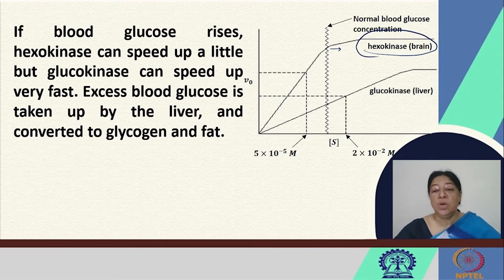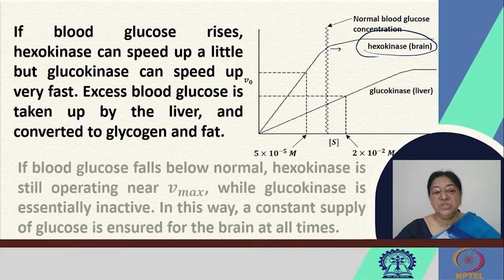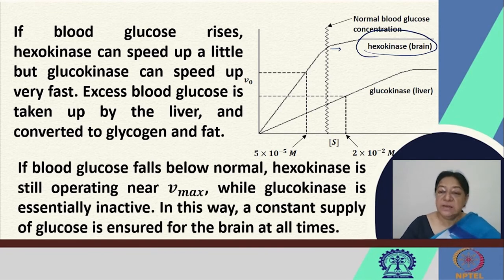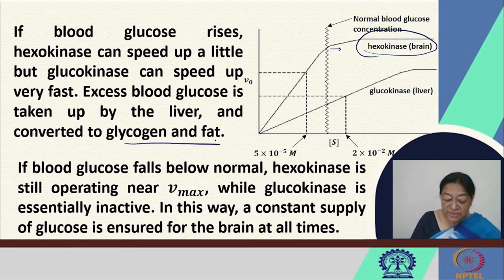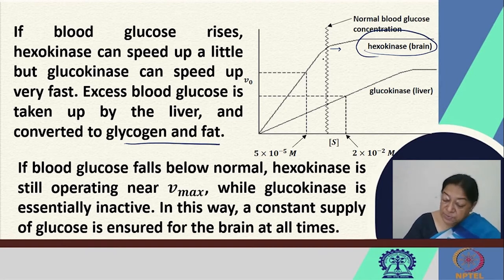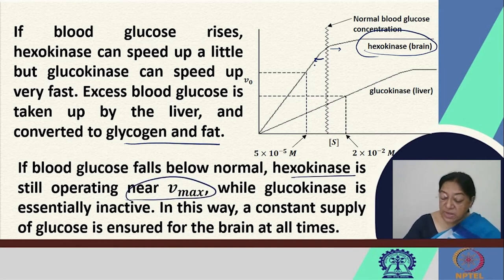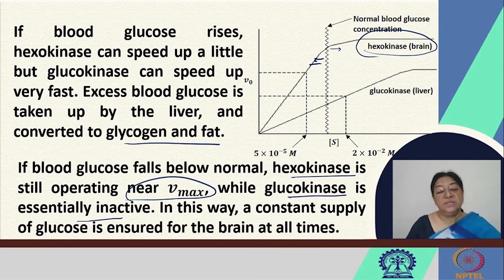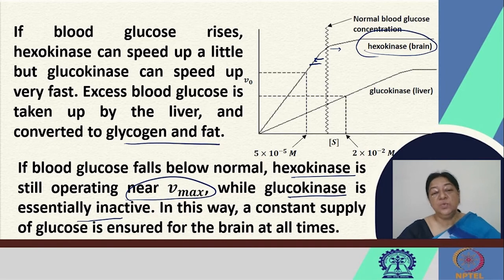When the blood glucose level rises, hexokinase is already near its Vmax so it cannot speed up as much. However, glucokinase can speed up dramatically. As a result, the excess blood glucose will be taken up by the liver and converted to glycogen and fat. If blood glucose falls below normal, hexokinase is still operating near its Vmax while glucokinase is essentially inactive. In this way, a steady supply of glucose to the brain is ensured at all times — a fascinating way in which levels are controlled by these two similar enzymes working on the same reaction.